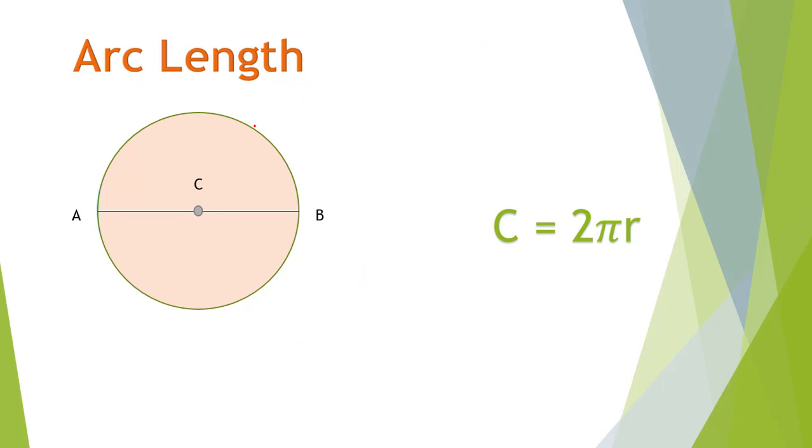Arc length. The complete boundary of a circle is 2 pi r. If you have to find the length of arc AB, this is half of a circle. If a complete circle is 2 pi r, we can divide it by 2 to get the length of half of a circle. That is pi r.